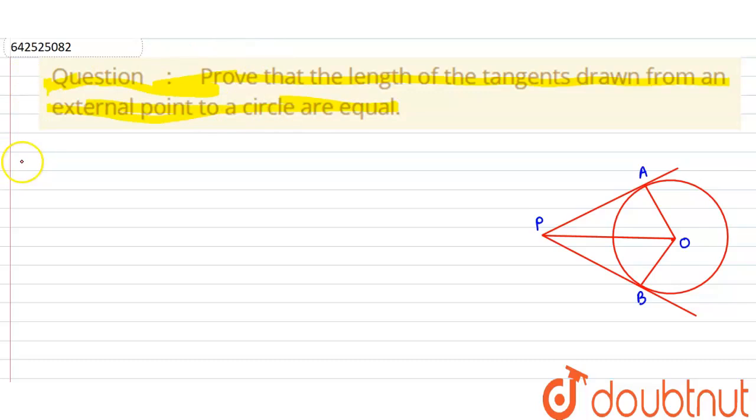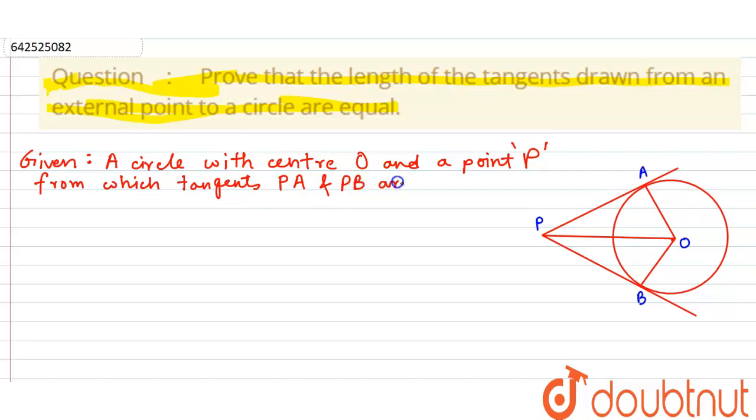Now let's write down what is given here. We are given with a circle with center O and a point P from which tangents PA and PB are drawn.